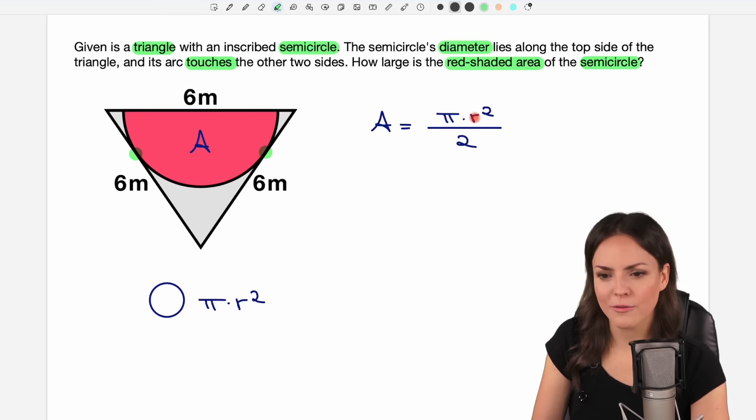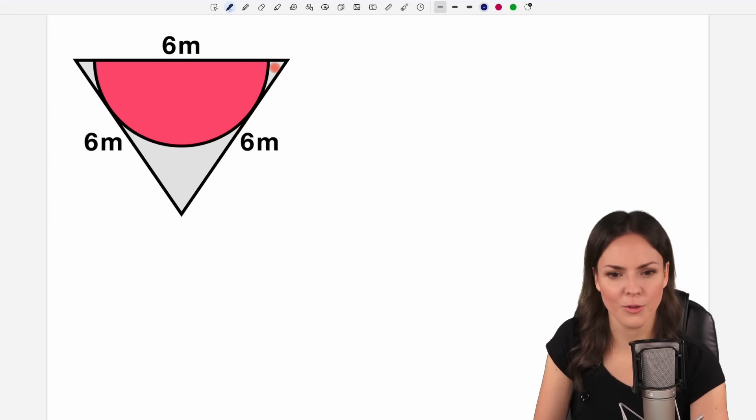So we only need to find our radius to be able to calculate the area. So let's try and find the radius of our semicircle.